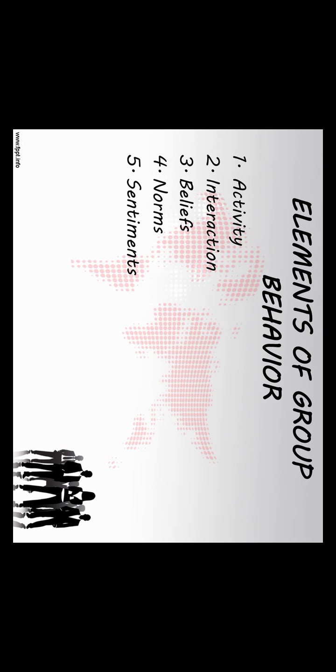Elements of Group Behavior: First, Activity — when a person does something, for example talks, runs or manipulates machinery, he is said to perform some activity. Second, Interaction — communication or contact between two or more persons so that the activity of one responds to the activity of the other. Every conversation is an interaction; it is important to note by whom they are initiated and whether two or more persons are simultaneously involved. Third, Beliefs — a belief or feeling which an employee must have to perform the assigned task is called a required sentiment. The belief or feeling which an employee brings with him into a group because of his life outside it and his personal background is known as a given sentiment.